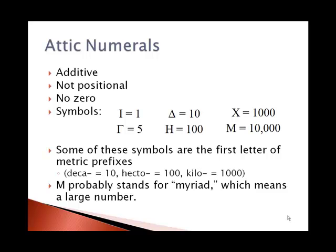If you know the metric system, some of these symbols are used: deca, meaning 10, for the delta; hecto, from the eta, meaning 100; and kilo, from the chi, meaning 1,000. M probably stands for myriad, which just means a whole lot.